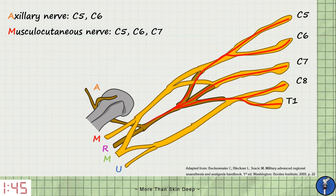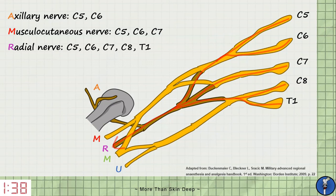The greedy radial nerve receives contributions from all five roots, C5, C6, C7, C8 and T1.